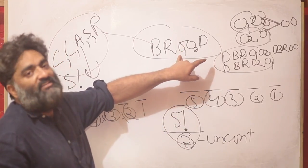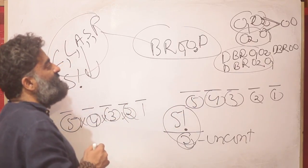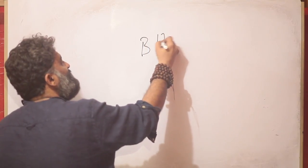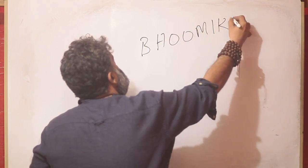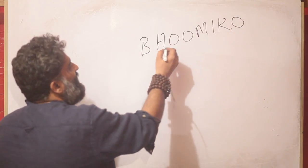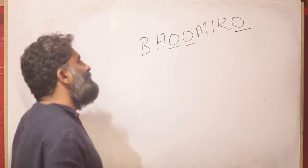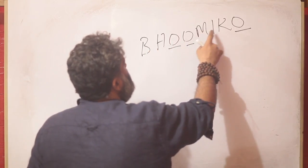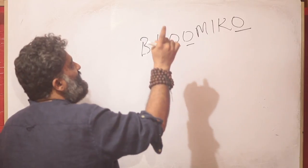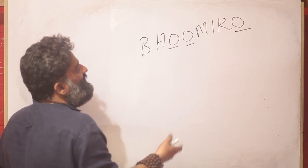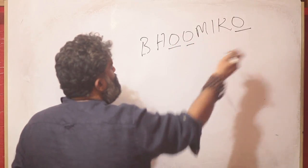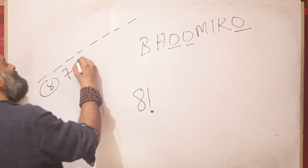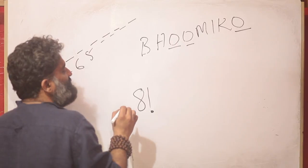To better understand this logic, let's move to an example where something repeats three times. The imaginary word is BHUMIKO — sounds like a Bengali name — which has 8 letters and three O's. The question is: in how many ways can the letters of BHUMIKO be reorganized into 8-letter words? If I don't worry about the repeating O's, my answer is straightforwardly 8 factorial because there are 8 positions. But what is the problem in this 8 factorial?